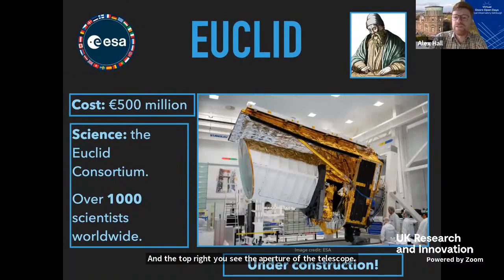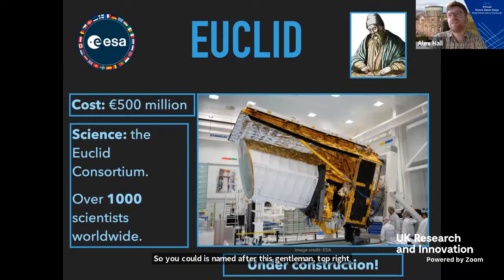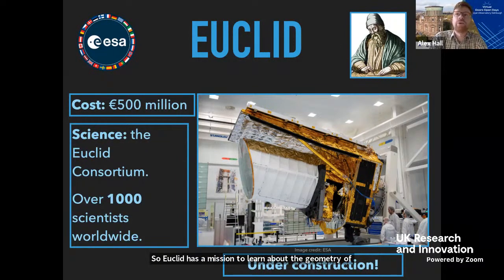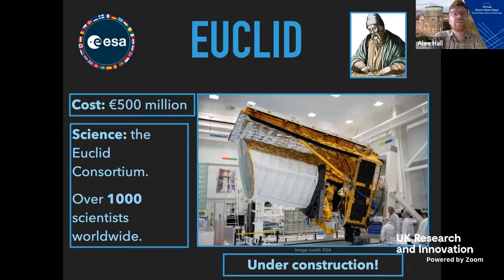Euclid is named after Euclid of Alexandria, who was around several thousand years ago and laid all the foundations of modern geometry. Euclid is a mission to learn about the geometry of the universe, which is why it's named after him. The total budget for the mission is about half a billion euros, paid for by the member states of ESA, of which the UK is one. The science analysis will be conducted by a large group of over a thousand scientists from all over the world.